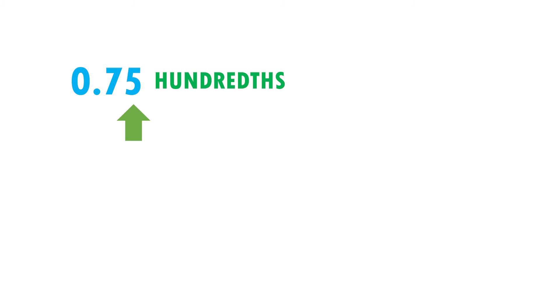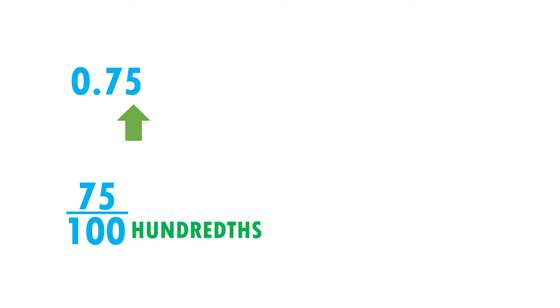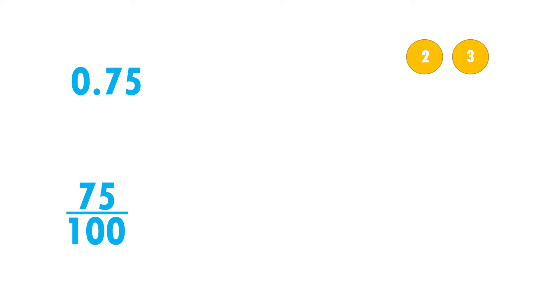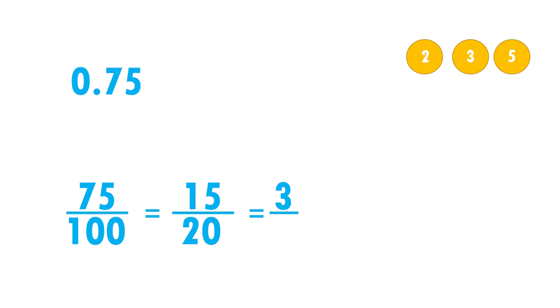Now I have 0.75. The digits are in the tenths and hundredths positions, so I put 75 in the numerator and 100 as the denominator. Both numbers cannot be divided by 2 or by 3, so I divide by 5: 75 divided by 5 equals 15 and 100 divided by 5 equals 20. Both can be divided again by 5: 15 divided by 5 equals 3 and 20 divided by 5 equals 4. Very easy! Therefore 0.75 equals 3/4.